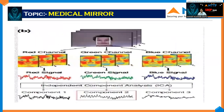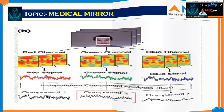This is the man in the demonstration. First, the system detects the face, then it captures the red channel, green channel, and blue channel. After sensing the signals, it converts them into red signals, green signals, and blue signals. After that, it processes through component 1, component 2, and component 3 via ICA — Independent Component Analysis. Then, it compares our body's frequency with the medical mirror frequency and shows what our current heartbeat rate is.